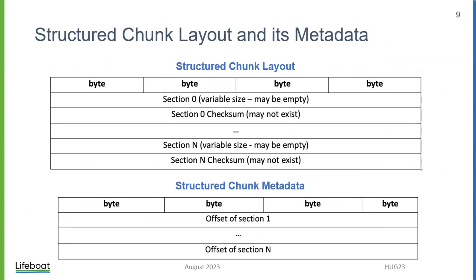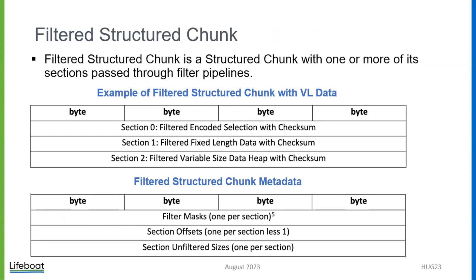We arrived at a new generalized structured chunk layout that has different sections. The file format allows us to have up to 255 sections now. If a section contains some kind of metadata to interpret data stored somewhere later in the chunk section, it will require a checksum. The structured chunk metadata holds offsets of each section. The same can be done with filtering — we will have storing in a filter structure chunk where each section can be compressed, and that will be reflected in the API and corresponding changes to the file format to find the full filter pipeline applied to each section.